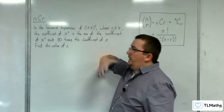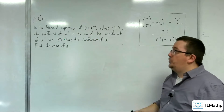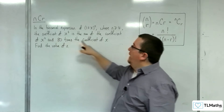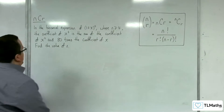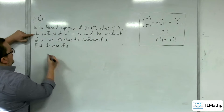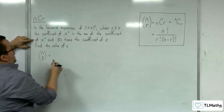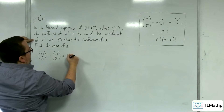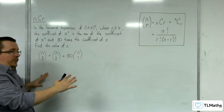From the previous video, because we know we've got (1+x)^n, the coefficients of these terms will be nC3, nC2, and nC1. I can utilise that to set up an equation. So the coefficient of x cubed, nC3, equals the sum of the coefficient of x squared, nC2, and 80 times the coefficient of x, nC1. That is what I need to solve.